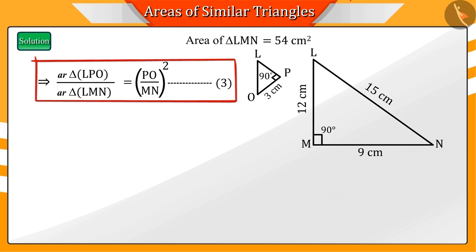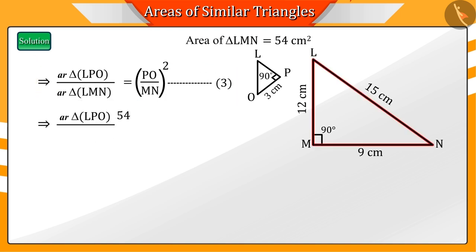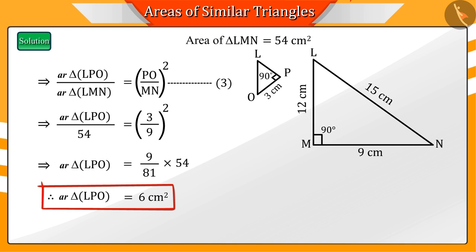Putting the value of the area of triangle LMN and side PO, we get the area of triangle LOP as 6 square centimeters.